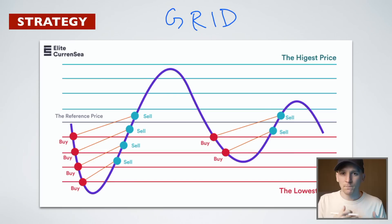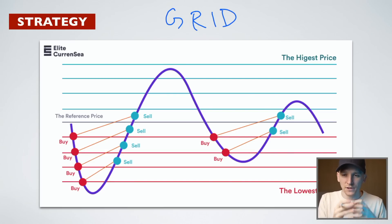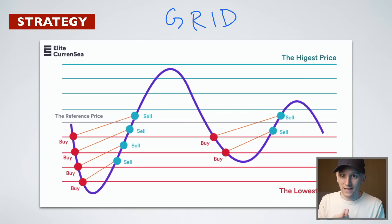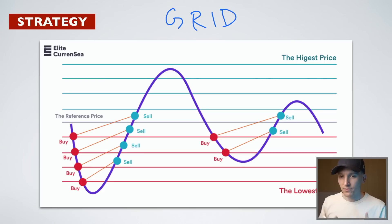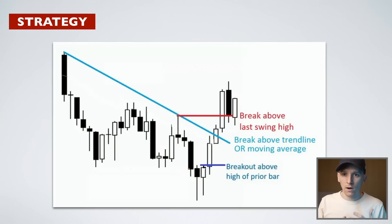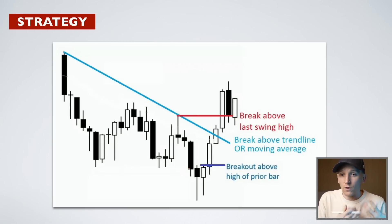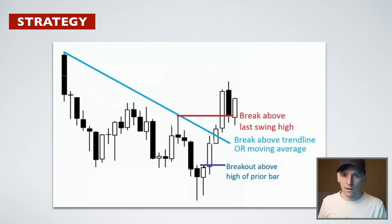If you think the price isn't going to move much over a six-month period — maybe up five percent, down five percent — a grid strategy just buys and sells a lot to take small profits out of the market within that sideways range. These do work to outperform a sideways ranging market, but if you're in a momentum-based market moving heavily in one direction, grids might not be the way to go.